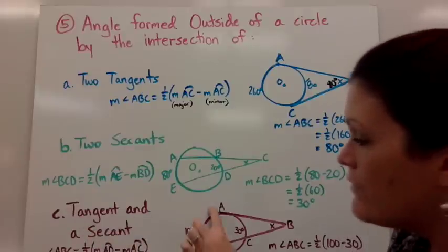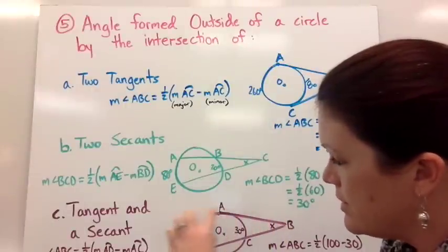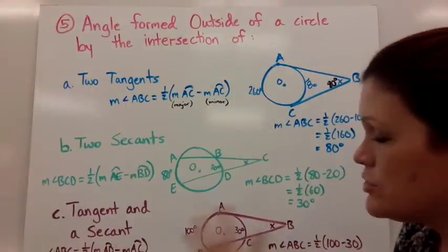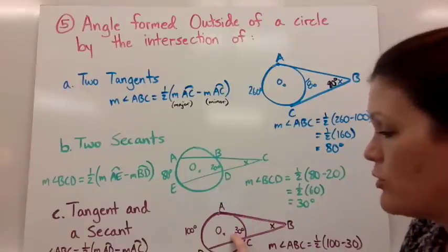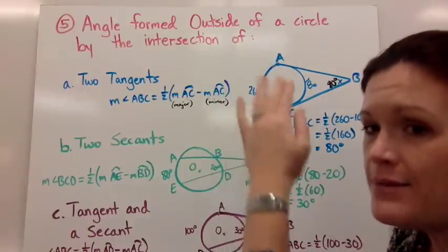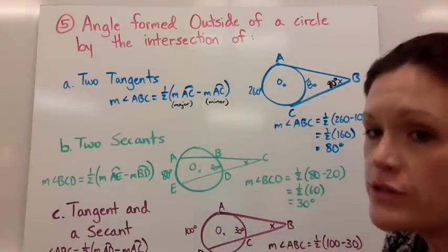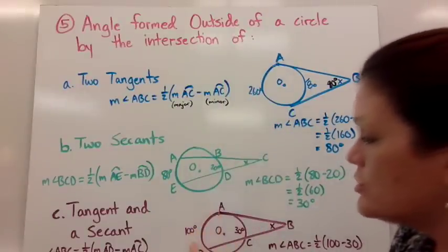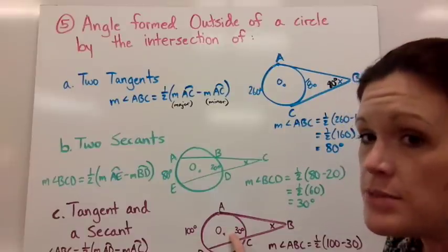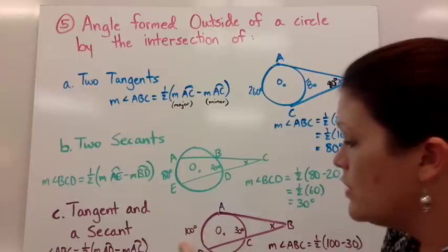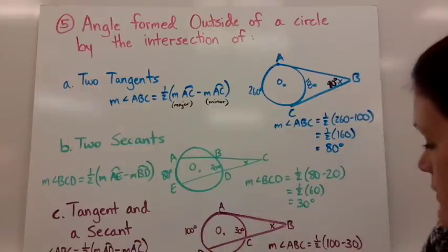Again, you take half of the larger arc that it's intercepting minus, or excuse me, not half of that. You take that measure minus the smaller one, then take half. So it's the same thing, if you notice, for all three of these pictures. You're taking the larger arc that's intercepted minus the smaller arc that's intercepted, and then you take half.